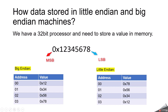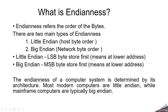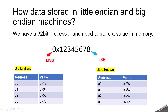If you want to store this data in a big-endian machine, the lower address will hold the MSB ('12'), followed by subsequent bytes ('34' at address 01, '56' at address 02, '78' at address 03). In a little-endian machine, the lower address holds the LSB ('78') first, and then the subsequent bytes follow in reverse order.